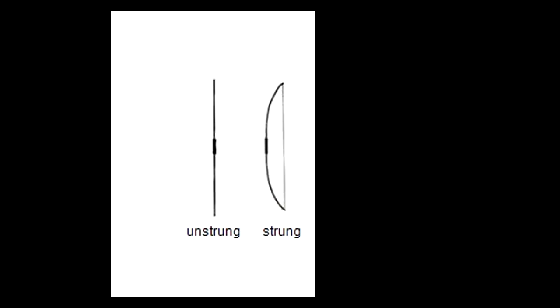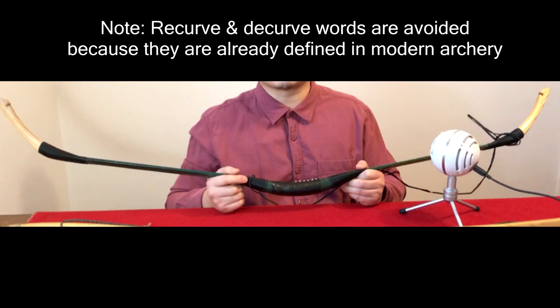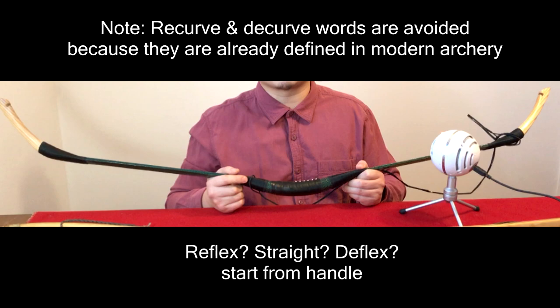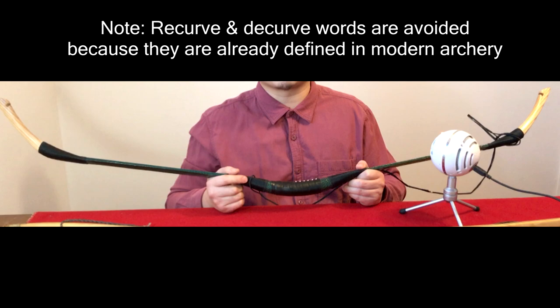For most of the naming it uses the un-strung shape, except when it comes to string contacts. Basically, it comes down to this: you start from the handle and describe its shape. There are only three possibilities — reflex, straight, or deflex. The word 'recurve' is not used in this system.